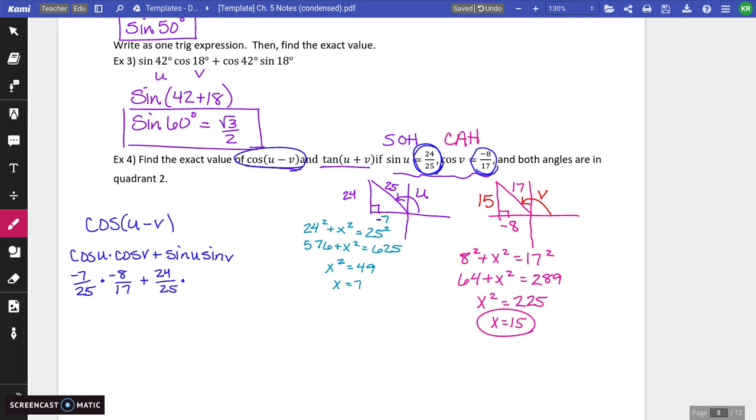Sine of U is 24 25ths times the sine of V. So go over to your second angle, angle V and sine is opposite over hypotenuse. Okay, so you're going to do some multiplication.